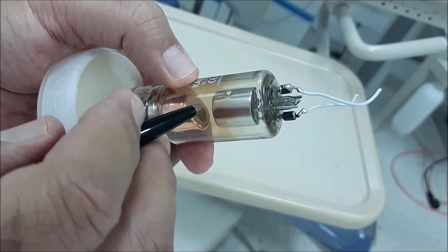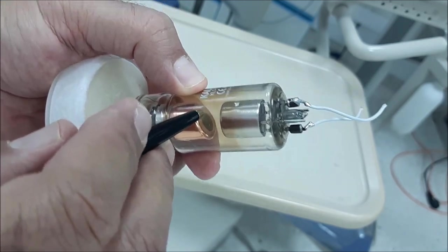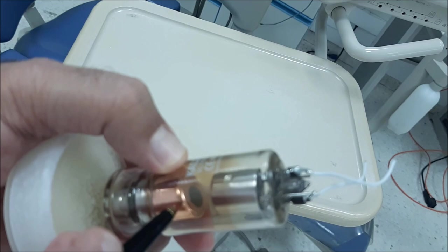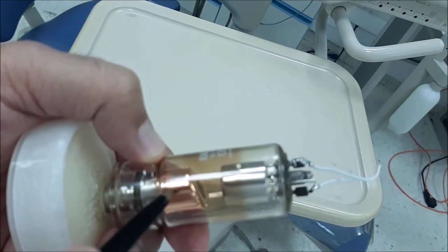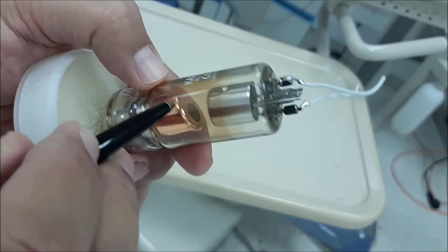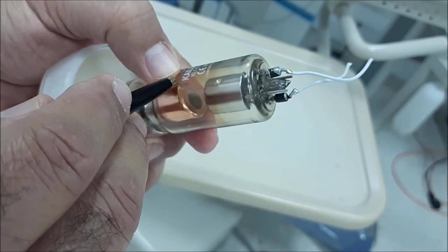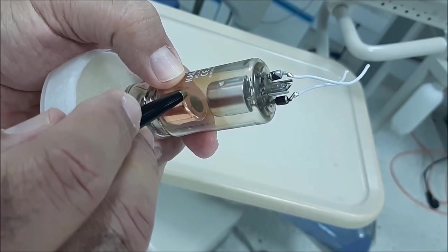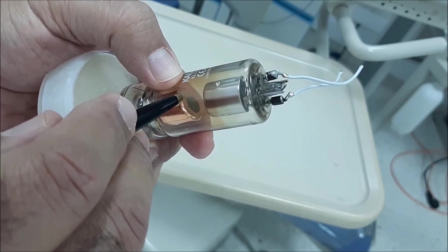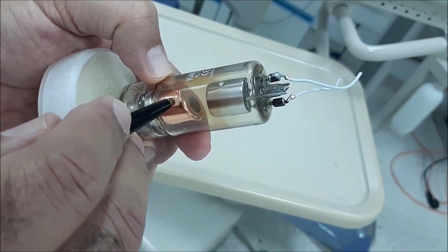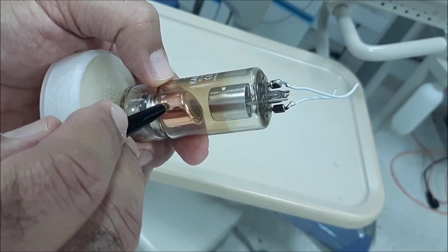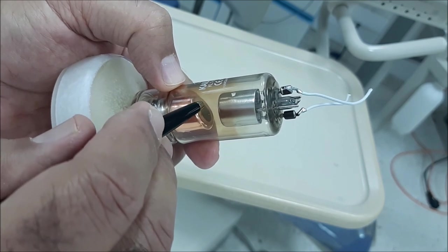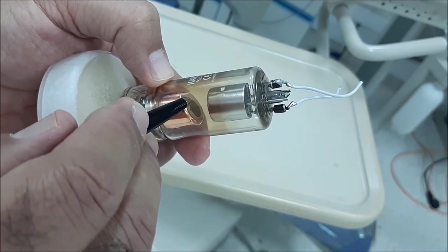That's why tungsten is embedded into the copper anode. Tungsten unfortunately is a bad thermal conductor, so it doesn't dissipate heat properly. That's why it is embedded in the anode.